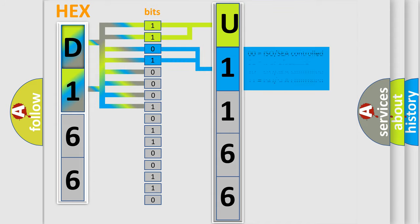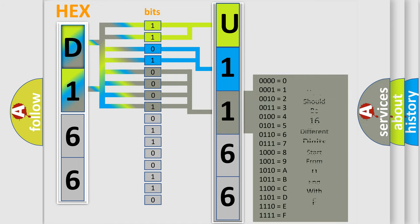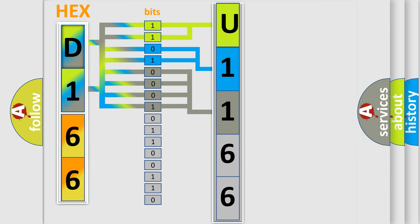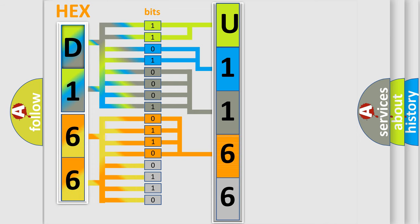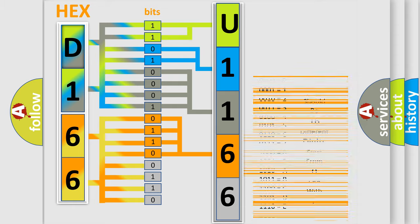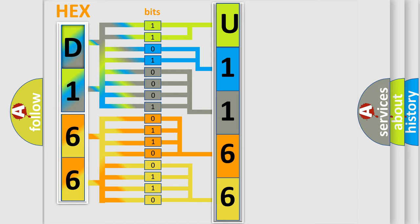The next two bits determine the second character. The last bits of the first byte define the third character of the code. The second byte is composed of a combination of eight bits. The first four bits determine the fourth character, and the combination of the last four bits defines the fifth character. A single byte conceals 256 possible combinations.